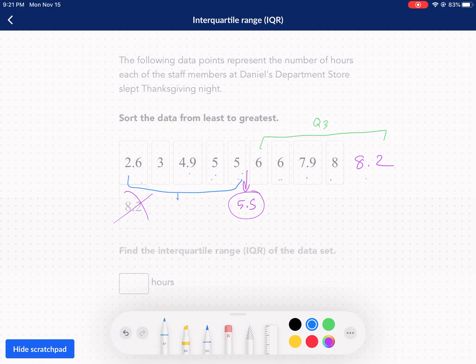Again, half the data needs to be on the left and half of it needs to be on the right. Now, I just have to find the median of this first half and it's 4.9. And then the median of the second half is 7.9. So the entire quartile range is 7.9 minus 4.9. I could have guessed that they were going to do that. Shame on me. So three hours.